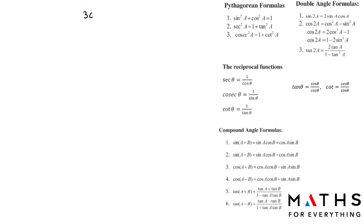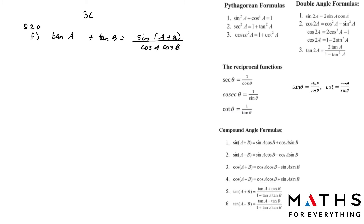Question number 20. Most of the questions are quite easy — you just have to expand and solve. I will do question number F. We have tan a plus tan b is equal to sine(a plus b) over cos a cos b. We will use the left hand side, changing tan a into sine a over cos a, and tan b can be written as sine b over cos b. Already we can see that in the denominator we have what we want.